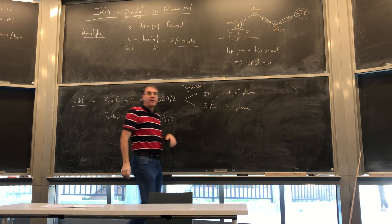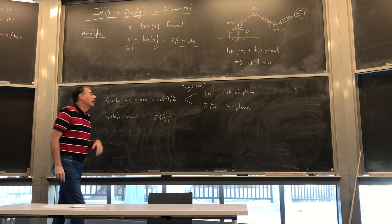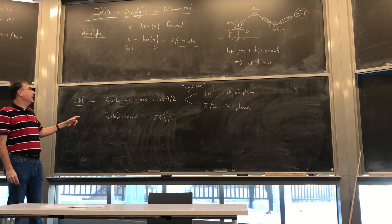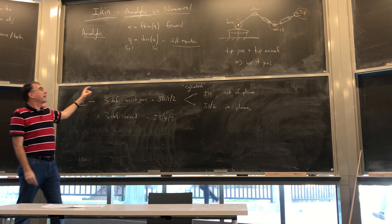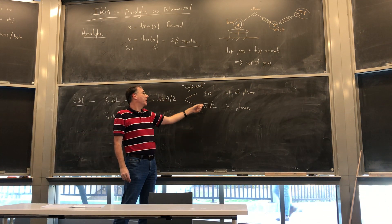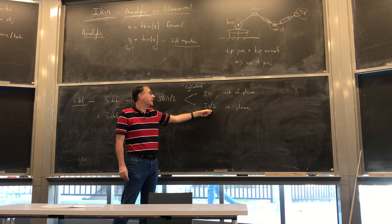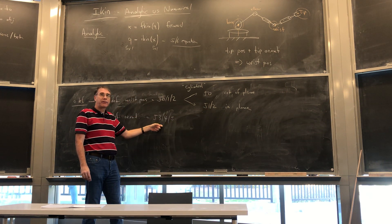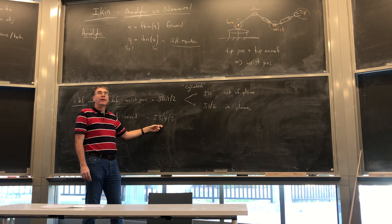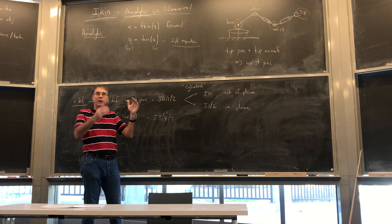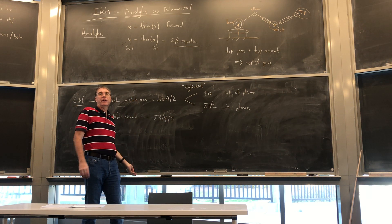Does that make sense? So for us it probably means we're going to break this down: we're going to compute J0, compute J1 and J2, and then compute J3 and J4 for orientation. So instead of trying to solve the whole system at once, you break it into those pieces.